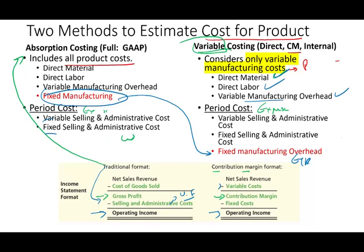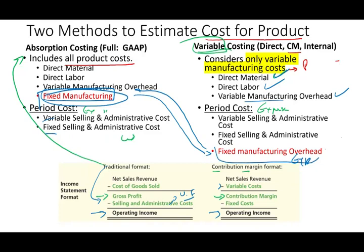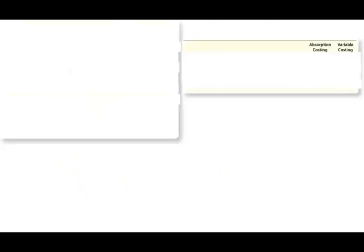If we produce and sell everything, those amounts equal each other, because the fixed manufacturing overhead gets expensed under both methods. So if units produced equal units sold, operating income will be the same under both methods.